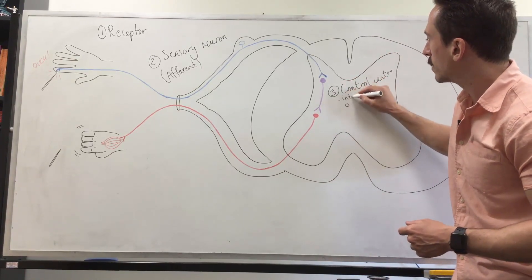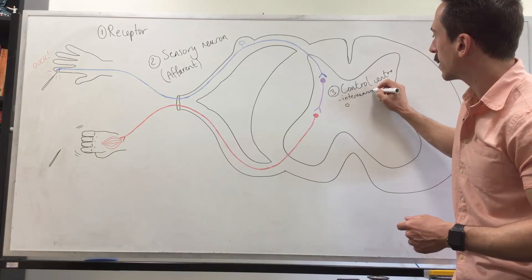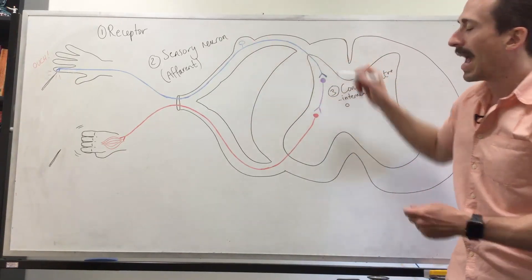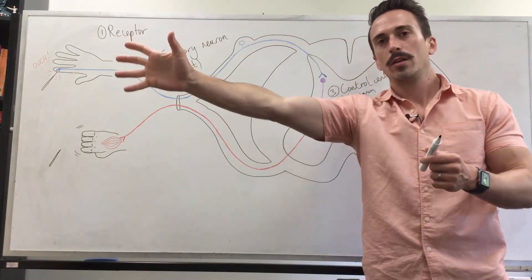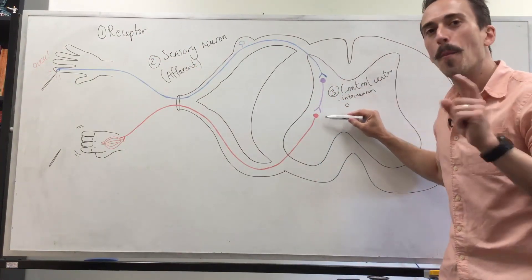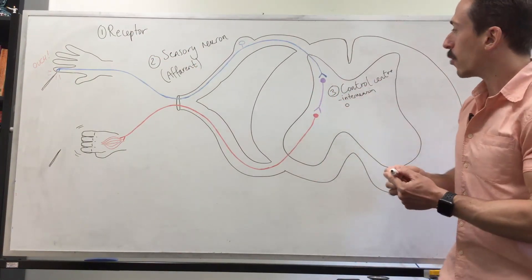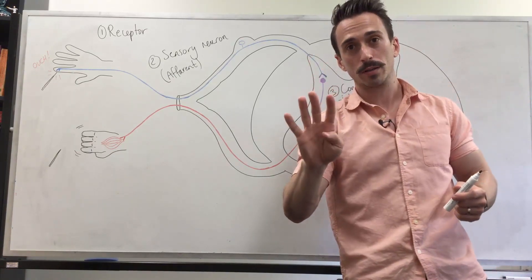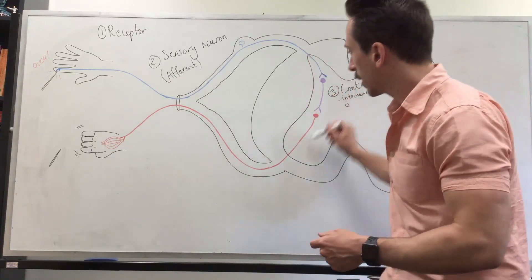What this interneuron does is it takes the signal that's come from the sensory neuron and sends it off to where it needs to go. In this case it needs to go to a lower motor neuron, and this lower motor neuron is the fourth component of the reflex arc.